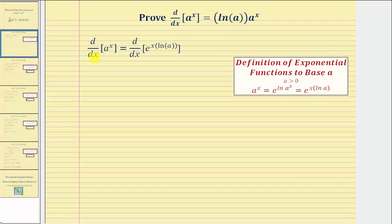Therefore, to begin the proof, we'll say the derivative of a raised to the power of x with respect to x equals the derivative of e raised to the power of x times natural log a, with respect to x.